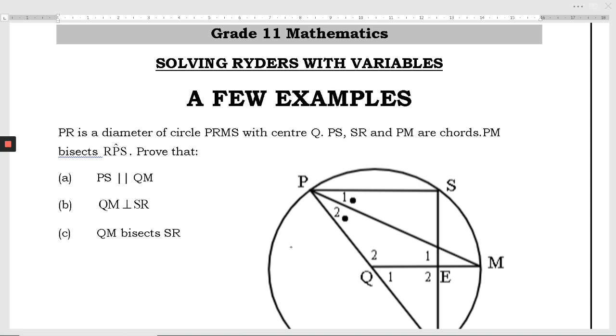Now we're going to look at a few examples. These are quite straightforward ones of solving riders with variables, and they mostly deal with two or three theorems at a time, and so that's a good way to start.